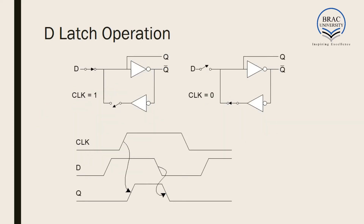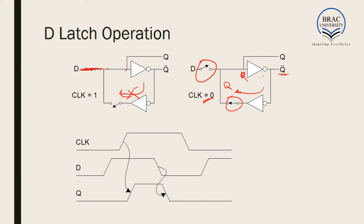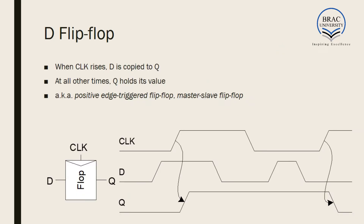When the clock is one, the first switch is short and output Q is connected to D, while the feedback loop has no effect. When the clock is zero, this switch opens and the other closes. Q goes through an inverter to become Q-bar, and through another inverter back to Q, so the output Q remains constant — the output is held.